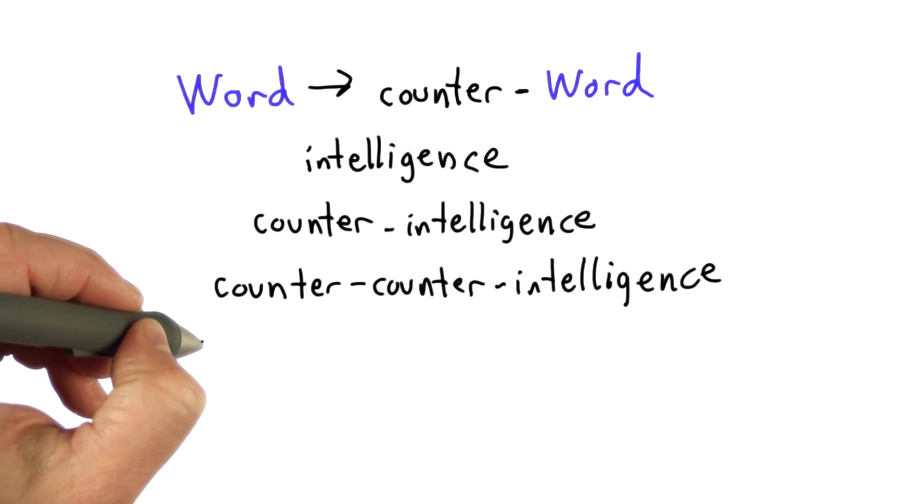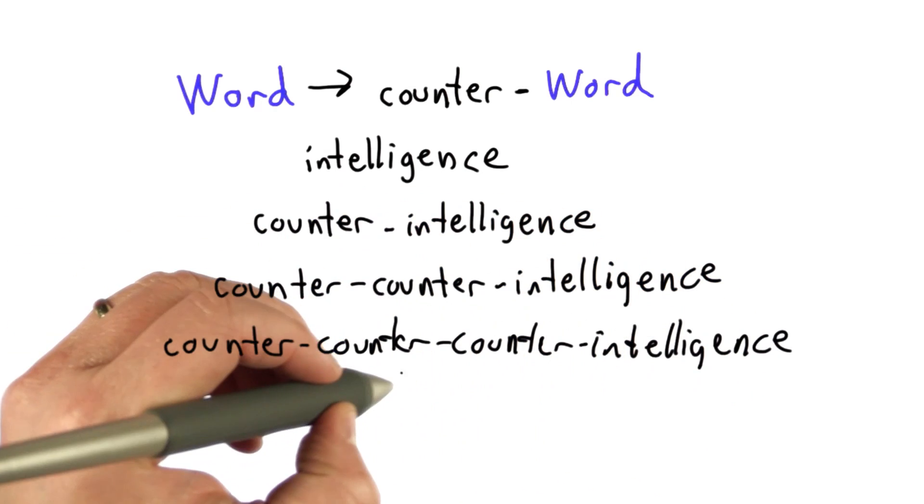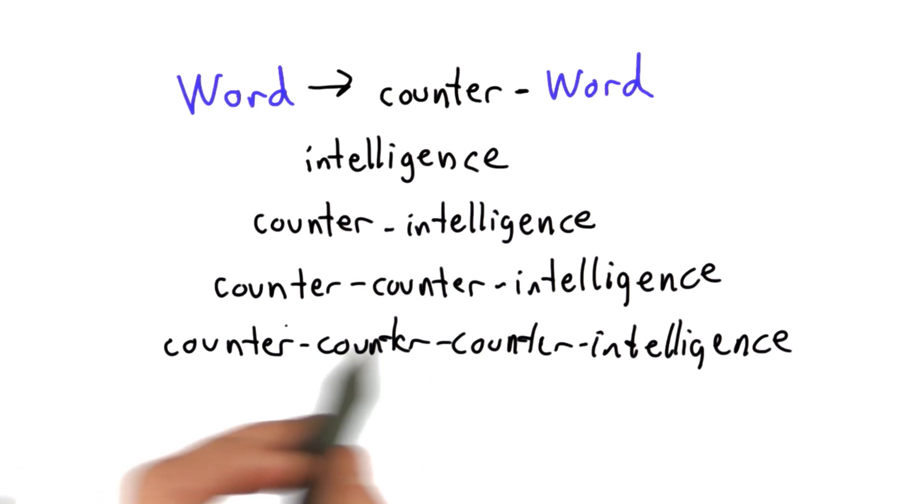And we could keep doing that. We could have counter-counter-counterintelligence, and so forth. And these are words that once we get up to at least three counters, it's not something that's used before. But it's still something that has a sensible meaning.